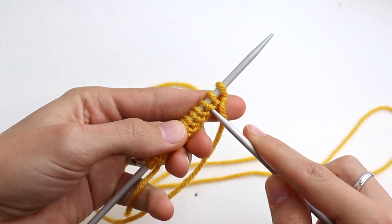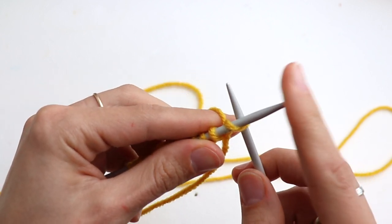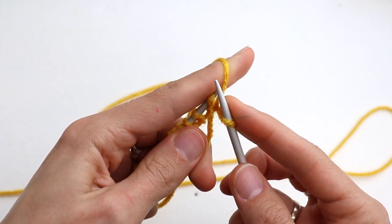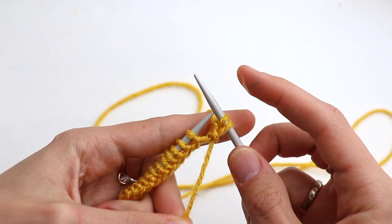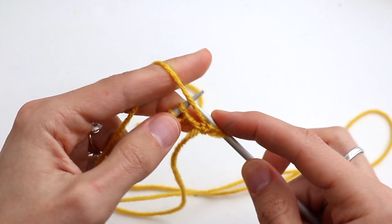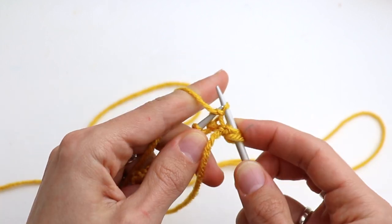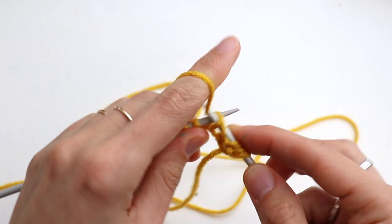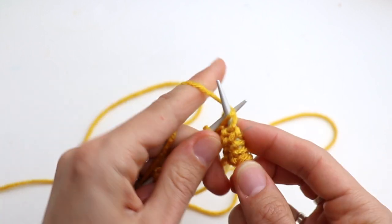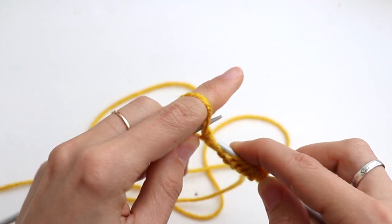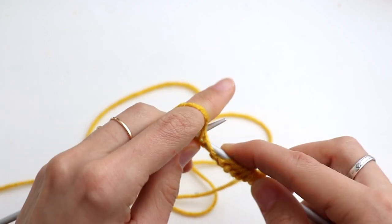Here I am on the wrong side, so slip the first stitch and purl all other stitches till the end. So I'm just going to knit just three rows stockinette stitch. It means we purl on the purl side, on the wrong side, and knit on the right side.